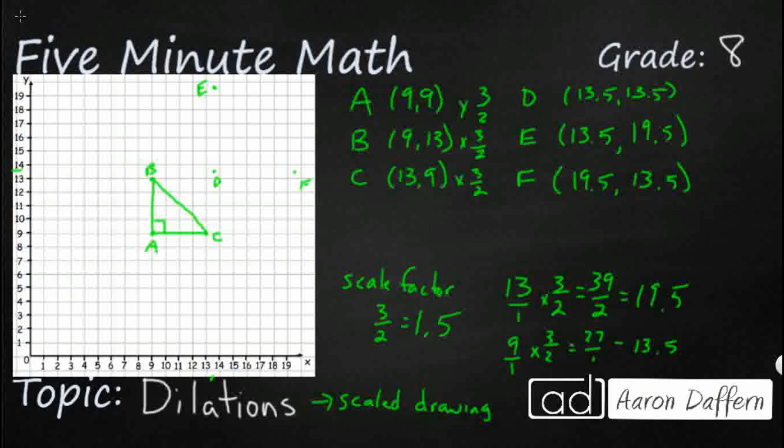So what I did is I made a scaled drawing. And it's 1.5 times larger than my ABC. So let me connect these dots right here. But it is similar because it is still an isosceles triangle.